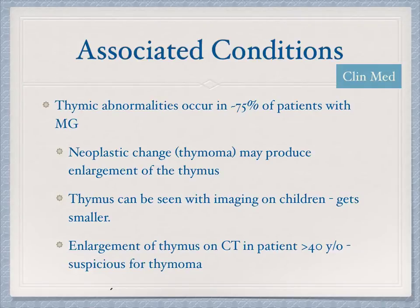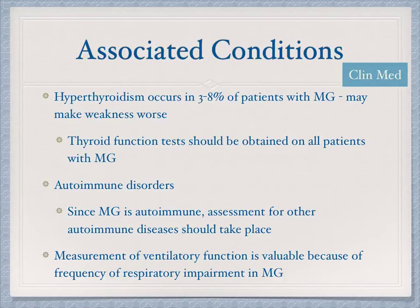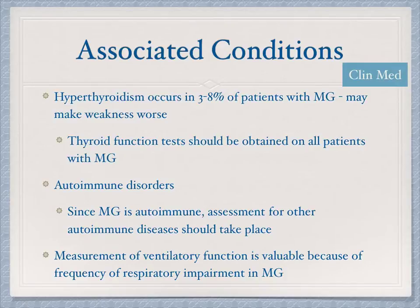Hyperthyroidism is seen in about 3% to 8% of patients with myasthenia gravis, so during workup you should get a TSH to confirm normal thyroid function. In addition, since myasthenia gravis is an autoimmune disorder, where there's one autoimmune disorder there are likely others — so consider other autoimmune processes in the workup as well.